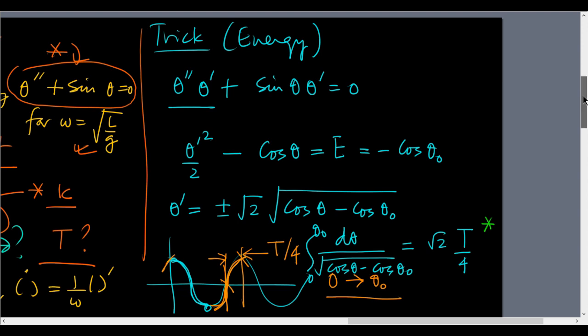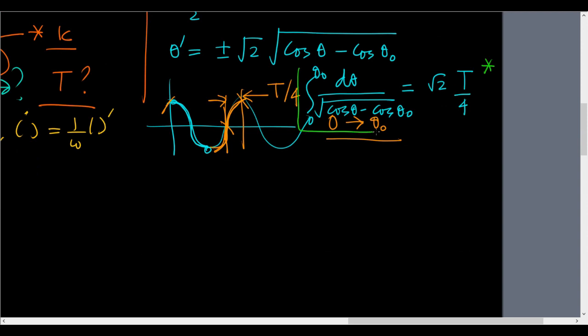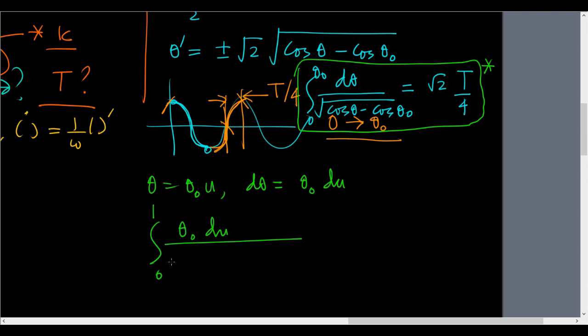To find this, this integral actually does not have a closed form solution, and the best way to do it at this time is to go to Maple. In Maple what we will do is we will say theta equals theta_0 u, then d theta equals theta_0 du. And so what we will then have is the integral from 0 to 1 of theta_0 du over the square root of cos theta_0 u minus cos theta_0. This is going to be square root of 2 times t by 4.